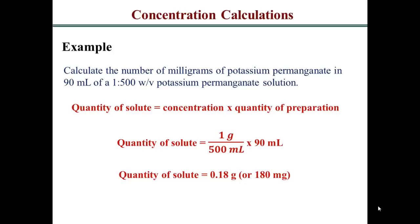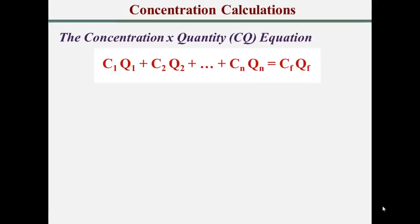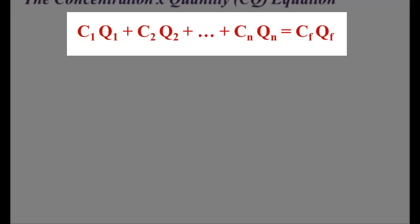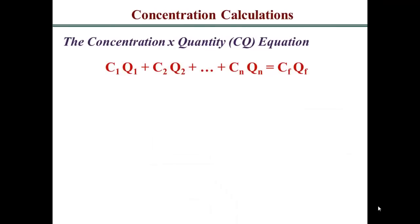Now if you change the total volume from 90 to 100 ml, your amount of solute is not going to change — you still have 180 milligrams. But because you increased the total quantity, your concentration will drop from 1 to 500; it will become more diluted. The CQ equation is basically an encapsulation of a mass balance — you are auditing the amount of active ingredient in your pharmaceutical preparation. The general form allows for as many different sources of your active ingredient.